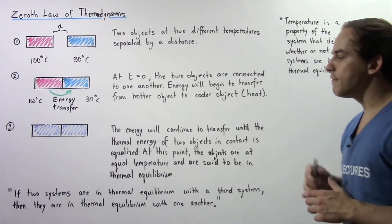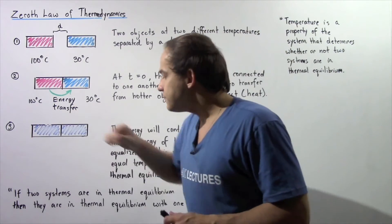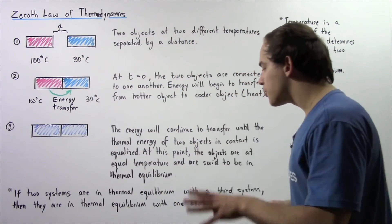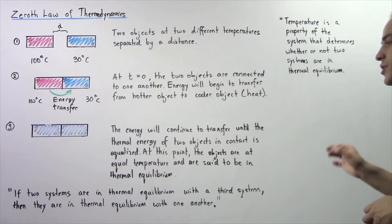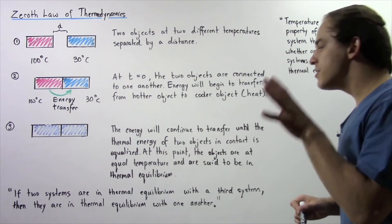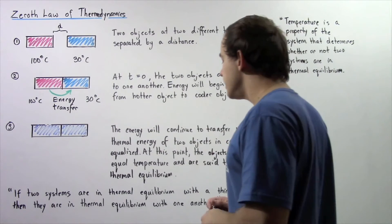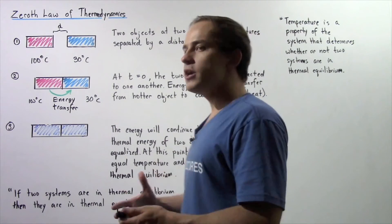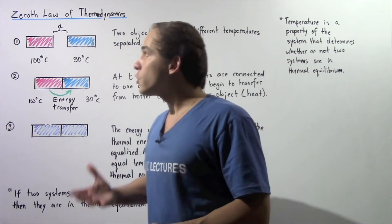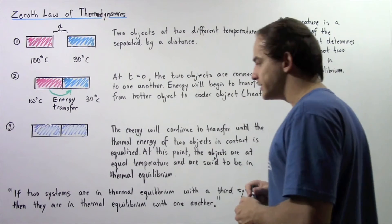The zeroth law of thermodynamics states the following: if two systems are in thermal equilibrium with a third system, then they are in thermal equilibrium with one another.